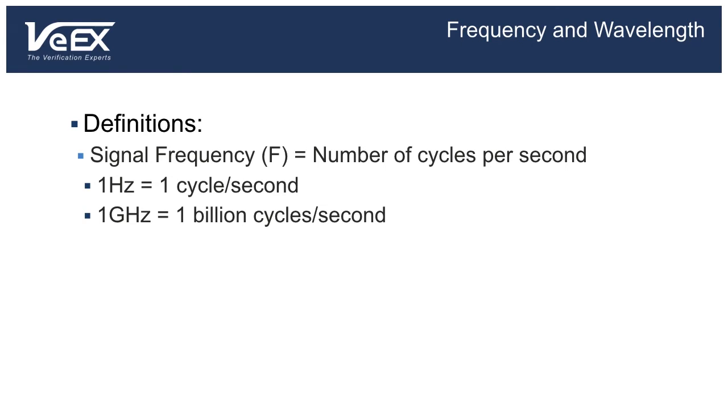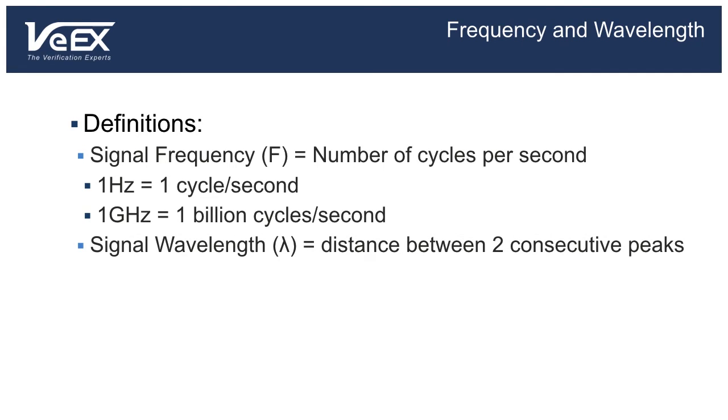Since electromagnetic waves travel at very near the speed of light, you can determine the wavelength of a signal by knowing its frequency, and vice versa using a formula. Frequency is C, or the speed of light, divided by lambda, which is the wavelength. The speed of light is roughly 300 million meters per second. So for a Wi-Fi signal in the 2.4 gigahertz band, the wavelength is in the range of 12 centimeters, and in the 5 gigahertz frequency band, the wavelength is about 5 centimeters.